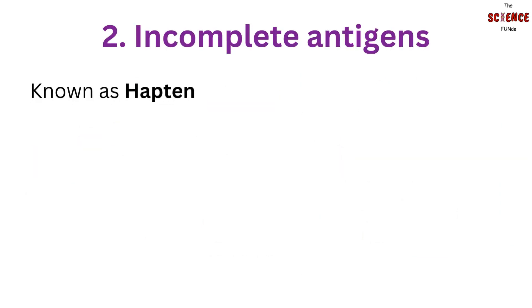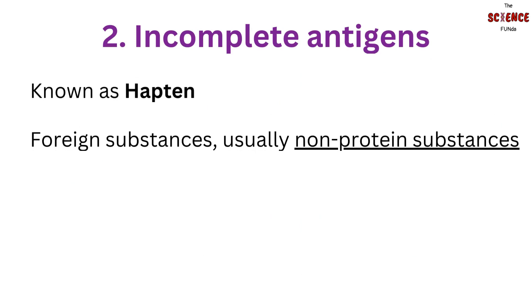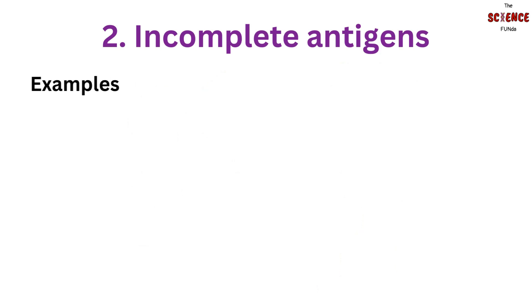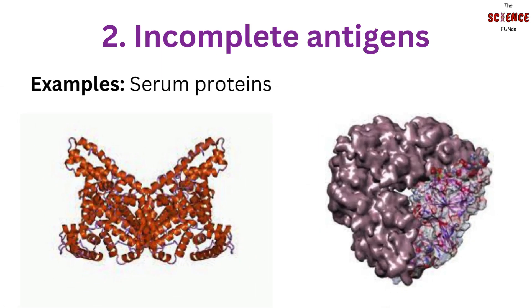The second type is incomplete antigens, also known as haptens. They are foreign substances, usually non-protein substances. They are unable to induce an immune response by themselves and require a carrier molecule to act as a complete antigen. The carrier molecule can be a non-antigenic component and helps in provoking the immune response. Examples of such antigens are serum proteins such as albumin or globulin.